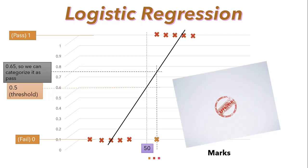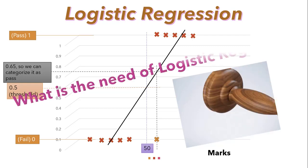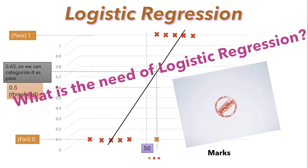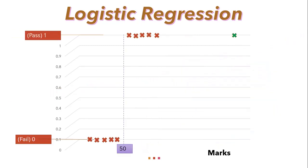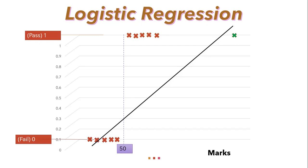Now the question arises: when we are able to solve this problem using linear regression, what is the need of logistic regression or binary classification? Let's change this task a bit. It's clear that all marks larger than a 13 threshold will be categorized as pass. So let's add another sample with higher marks, highlighted with a green point on the screen, and try to create the best fit line again.